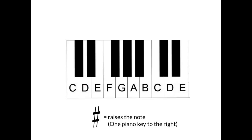If we had D right here and we wanted to go one key up to the right, then this note would be D sharp. Just like with the flats, there are two weird notes. If we wanted to make E into an E sharp, one key to the right would be this right here, so E sharp and F are the same note. And then B is the same thing — B right here, if we want to go to the right, it would be B sharp, and that would be the same as regular C.